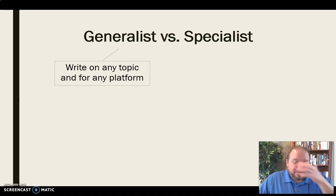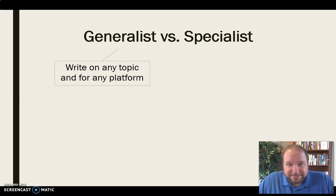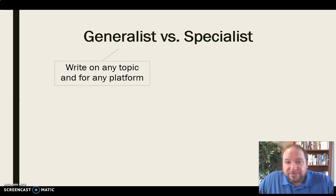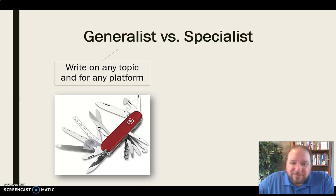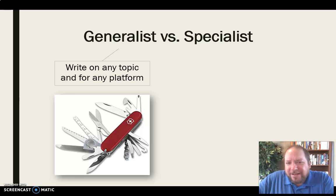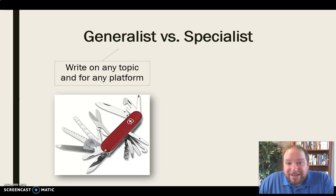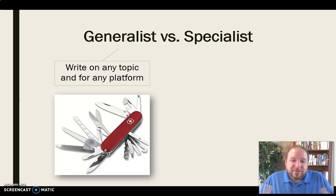A generalist can also write for any platform — newspapers, magazines, their own blog, an online news source, anything. They're not specializing in their topic or their platform. They're sort of like the Swiss army knife of journalists — they can do a lot of different things. The sacrifice is that you may not do any one of those things especially well compared to somebody who specializes in that area, because they really know that topic inside and out.